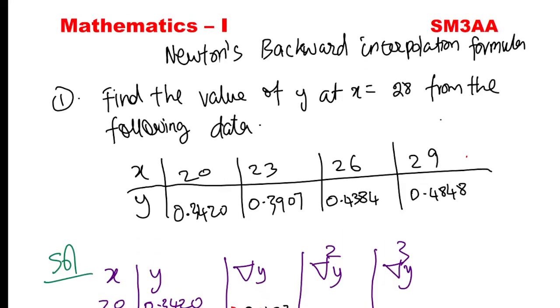So in this video, Newton's backward interpolation formula. This is the backward interpolation problem. Newton's forward is correct, so that's why we have a formula. If you have backward, first of all, this is equal interval because this difference is 3.